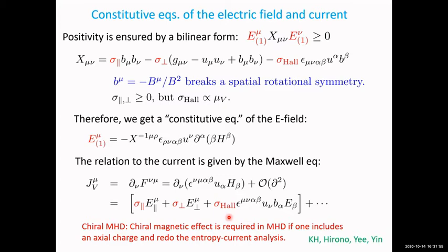I don't have time to show the detailed analysis for color MHD, but in this paper we have done the analysis. We found that the chiral magnetic effect should be present in MHD if one includes the axial charge dynamics and redoes the entropy current analysis — CME is basically required by entropy current analysis.